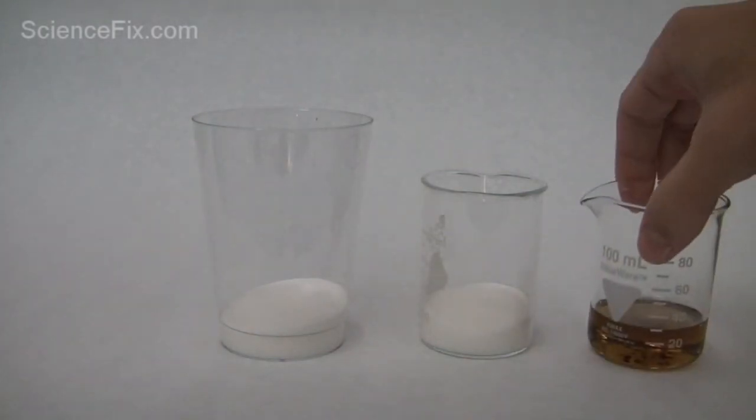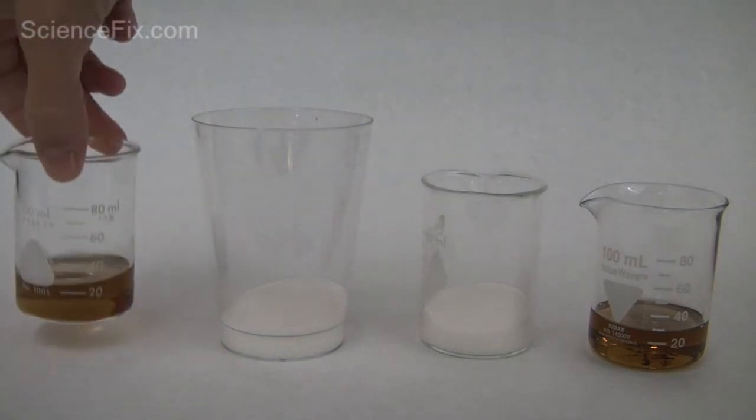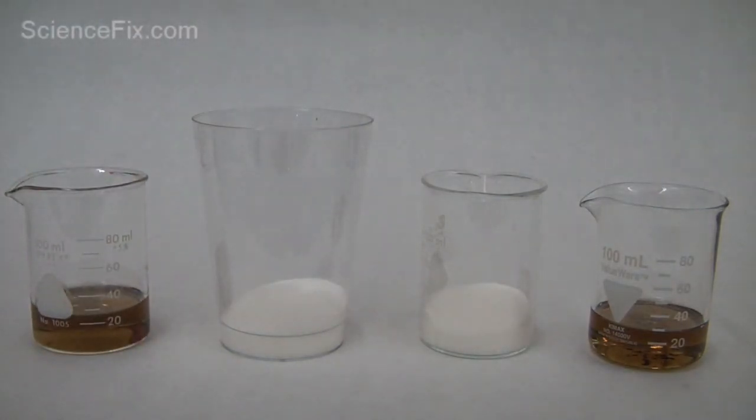The two different containers are sucrose, sugar. One's in a plastic cup on the left, the other one's in a glass beaker on the right.